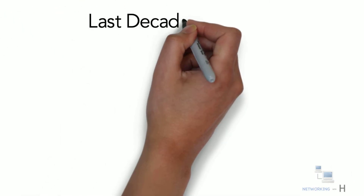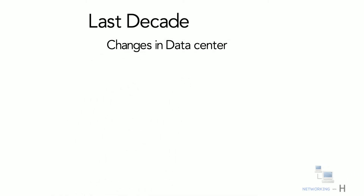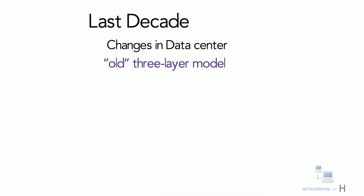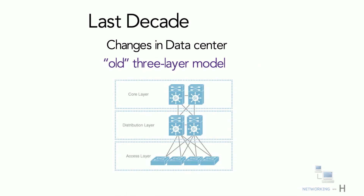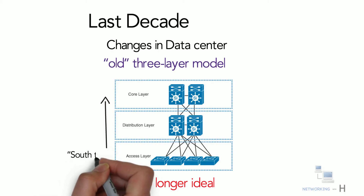Many things have changed in the data center over the last decade or so. In fact, so much has changed that the old three-layer model of access, aggregation, and core is no longer ideal, as this model was designed based on a south-to-north flow of data.